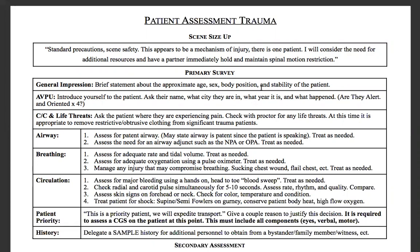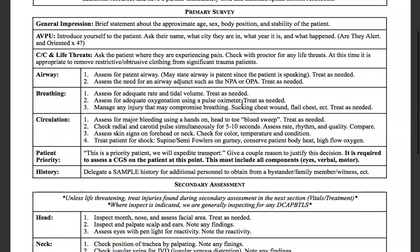Primary survey: general impression — a brief statement about age, sex, body position, and stability of the patient. For AVPU, introduce yourself, ask their name, what city they're in, what year it is, and what happened. For trauma patients, we ask four questions: person, place, time, and event — are they alert and oriented times four? Chief complaint and life threats: ask where they are experiencing pain. Just ask them where it hurts. Ask the proctor for any life threats. At this time, it is appropriate to remove restrictive clothing from significant trauma patients — if you need to cut the shirt off, this is the appropriate point in the assessment to do that.